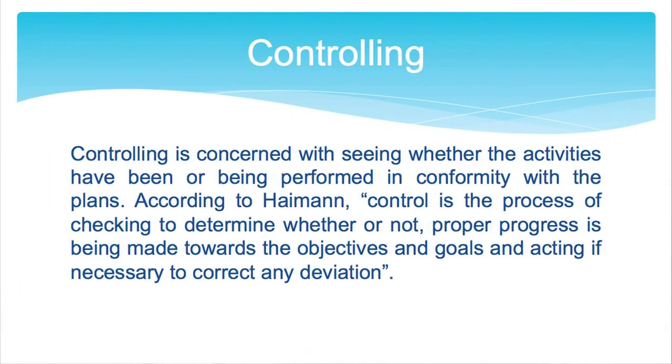Then comes the function of controlling. Controlling is basically checking whether we have reached the goals stated in the planning stage. It is concerned with seeing whether activities have been or are being performed in conformity with the plans. According to Hamron, control is the process of checking to determine whether or not proper progress is being made towards the objectives and goals, and acting if necessary to correct any deviations. If we have not achieved as per the plan, we need to take corrective actions and check where mistakes were made.